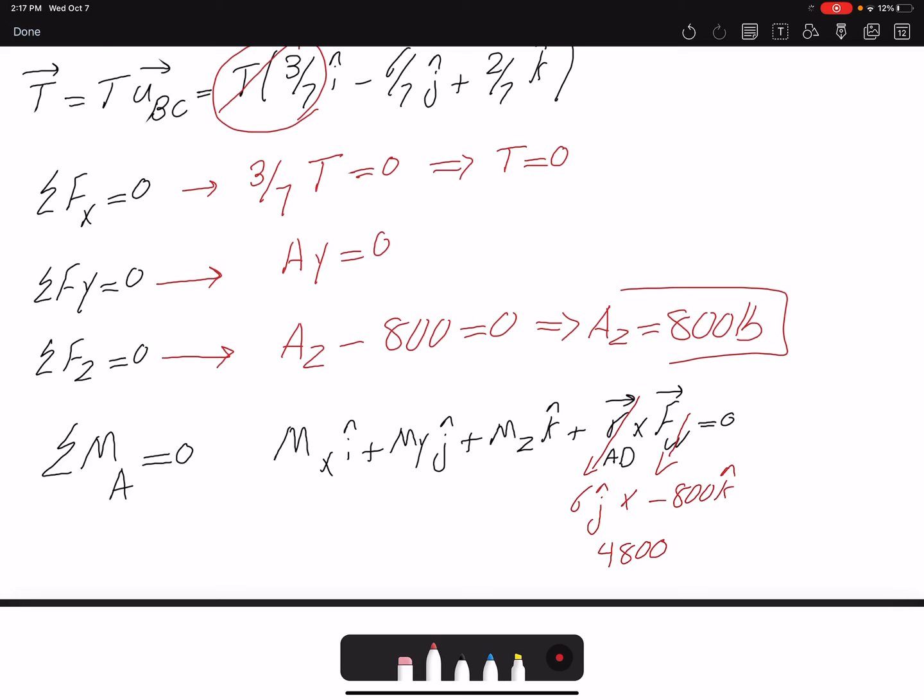J cross K will give me i. And the cross product is not going to change any sign here because we are going counterclockwise.